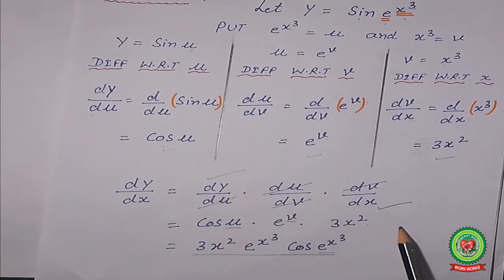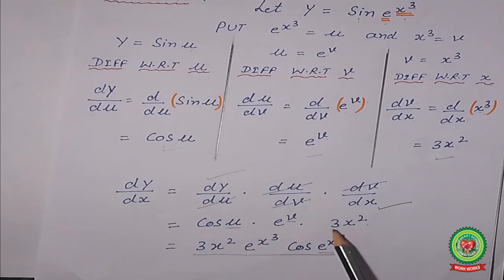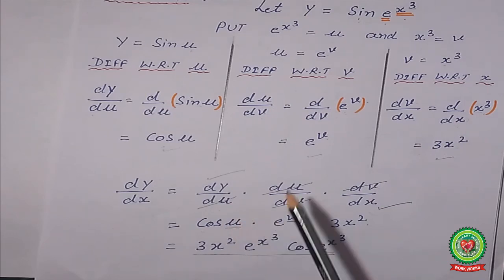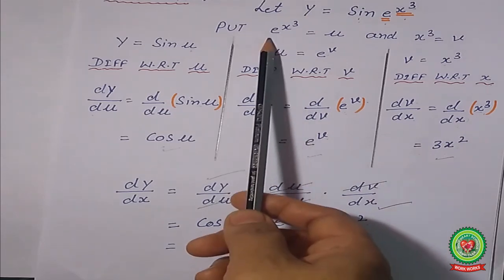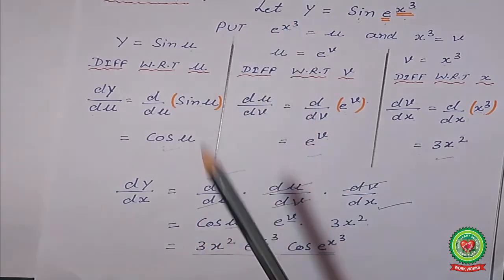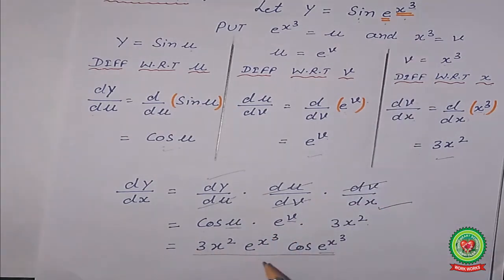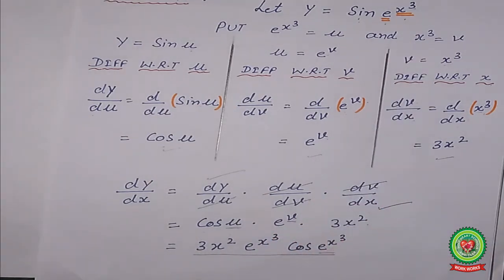Now put the values back. The value of u is e^(x³), and the value of v is x³. And 3x² remains as it is. So the final answer is: dy/dx = cos(e^(x³)) · e^(x³) · 3x².